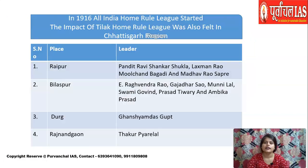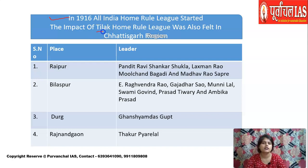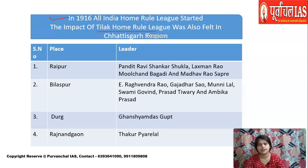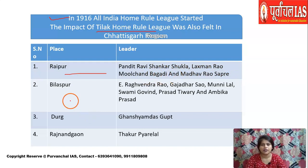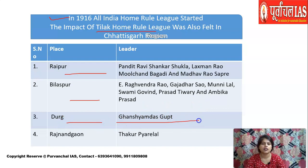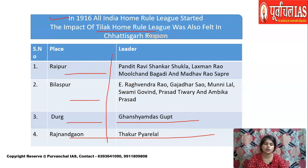In 1916, All India Home Rule League was started by Tilak and Annie Besant, and its impact was felt in Chhattisgarh. Leaders who publicized nationalism through the Home Rule movement included: from Raipur — Pandit Ravi Shankar Shukla, Laxman Rao, Mulchand Bagadi, Madhav Rao Sapre; from Bilaspur — Ragvendra Rao, Gajadar Sao, Munni Lal, Swami Govind Prasad Tewari, Ambika Prasad; from Durg — Ghanshyam Das Gupta; from Rajnandgaon — Thakur Pyarelal Singh.